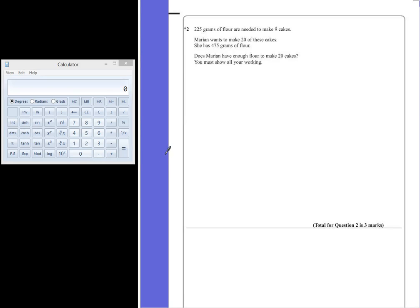Question 2. 225 grams of flour are needed to make 9 cakes. Marion wants to make 20 of these cakes. She has 475 grams of flour. Does Marion have enough flour to make 20 cakes? You must show all your working.